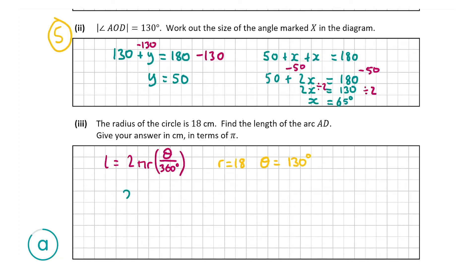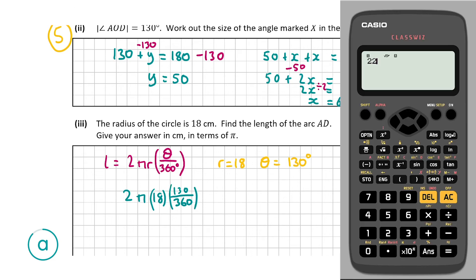Putting this into the formula: 2 times pi times 18 times 130 over 360. Entering this into the calculator — press shift and the pi button — gives 13 pi. Since the question asked us to keep the answer in terms of pi, the answer is 13π centimetres.